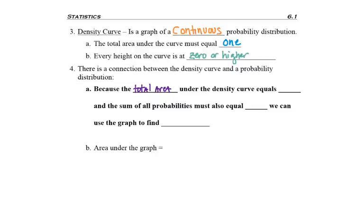Because the total area under the density curve is going to equal one, and the sum of all probabilities equals one, we can use our density curve, our graph—remember density curve is just a graph—to find probability.